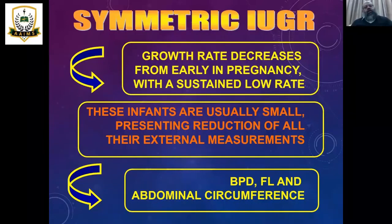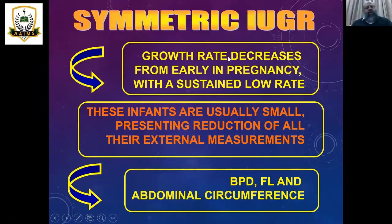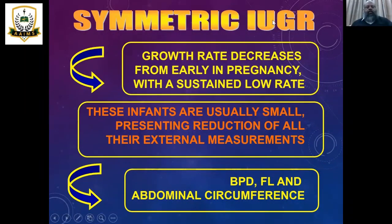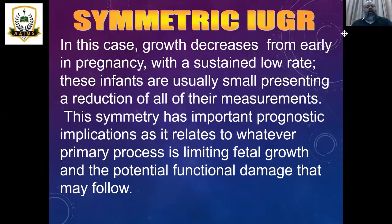In symmetric IUGR, the growth rate decreases from early in pregnancy with a sustained low rate. These infants are small with a reduction in all external measurements. As the name suggests, the whole body is symmetrically small compared to the gestational dates — BPD, femur length, and abdominal circumference are all smaller than required for that specific gestational age.